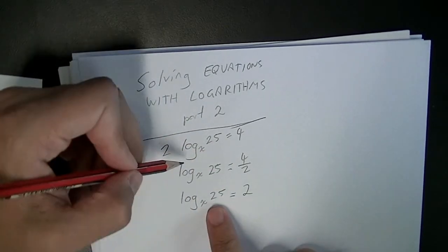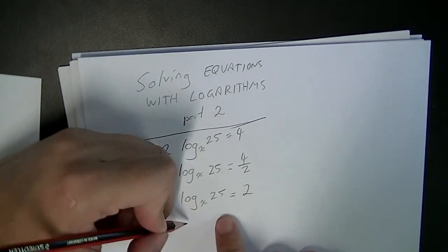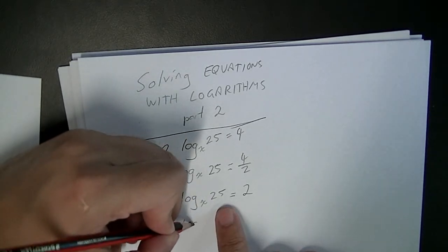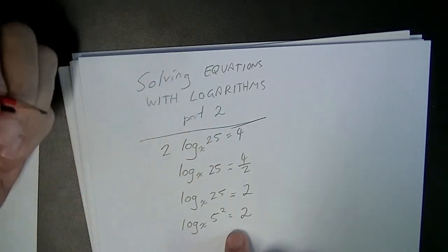Now, from here, you should be able to see that 25 is a square number. So we can write this as log base x of 5 to the power of 2 equals 2.